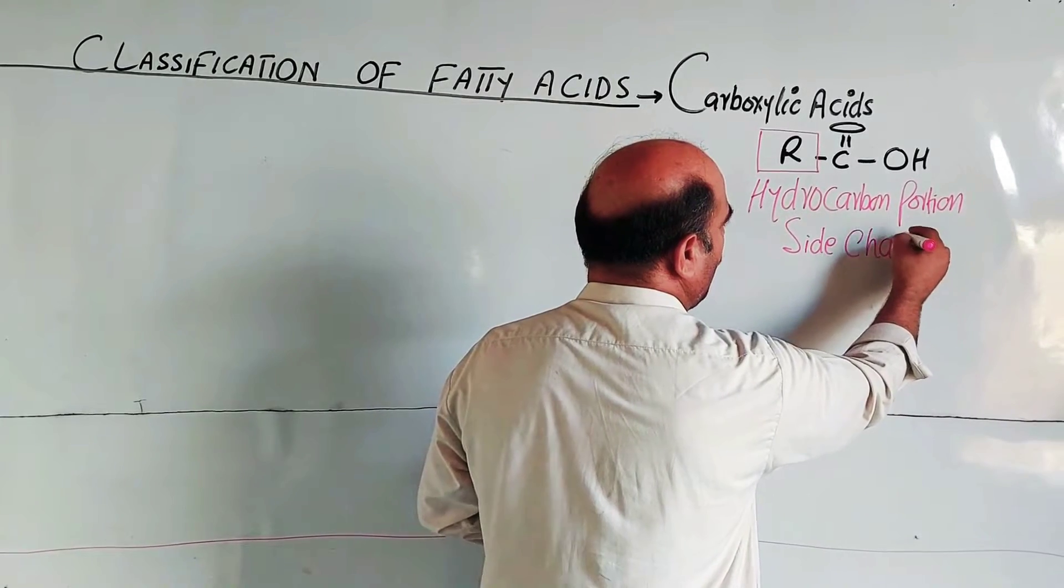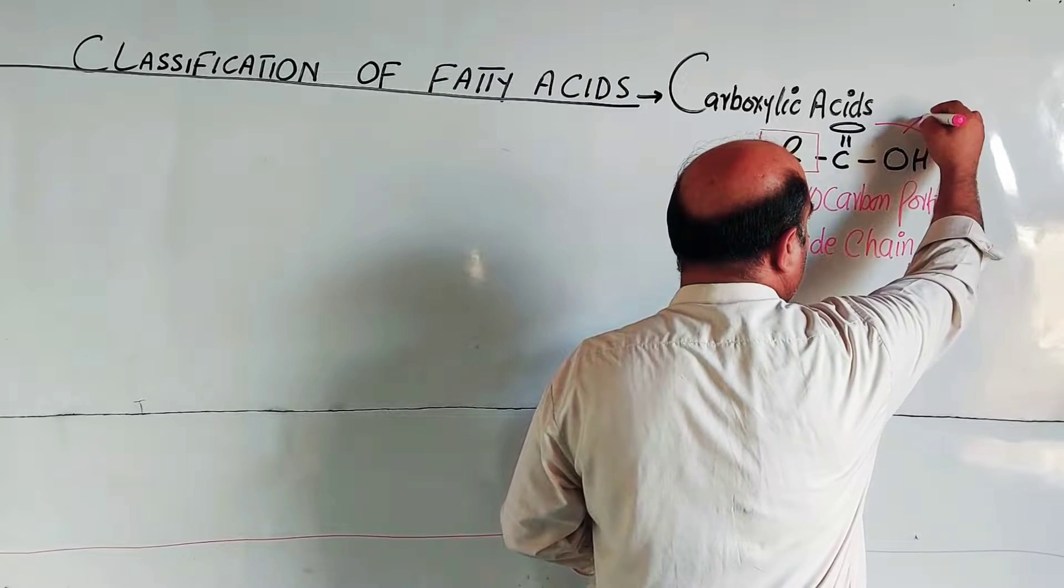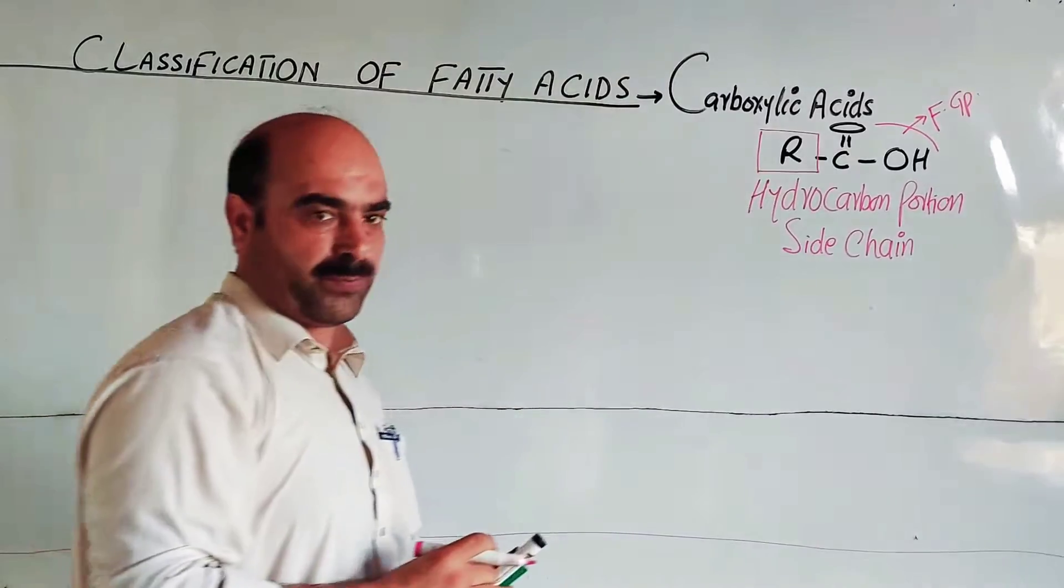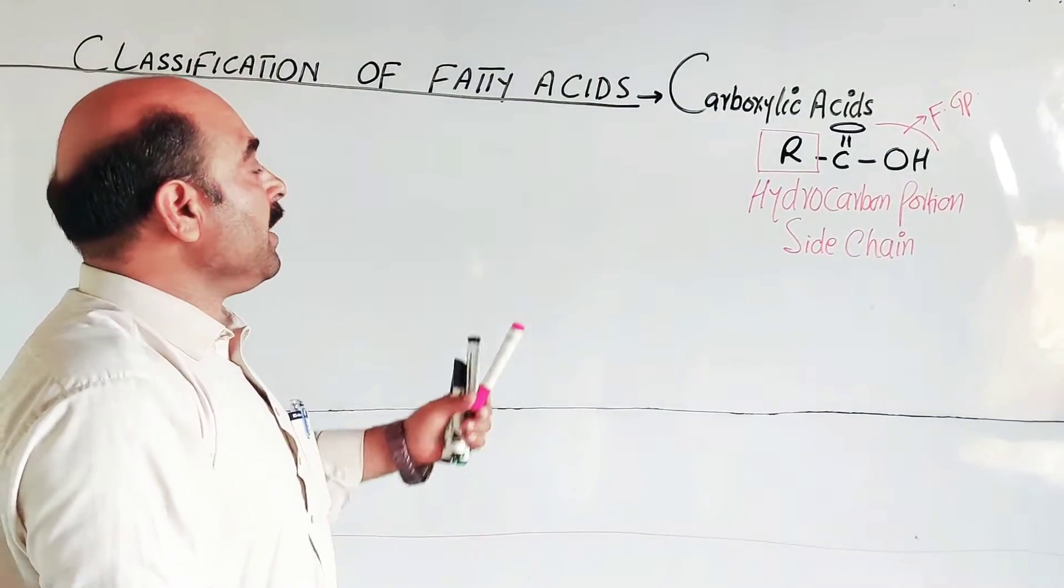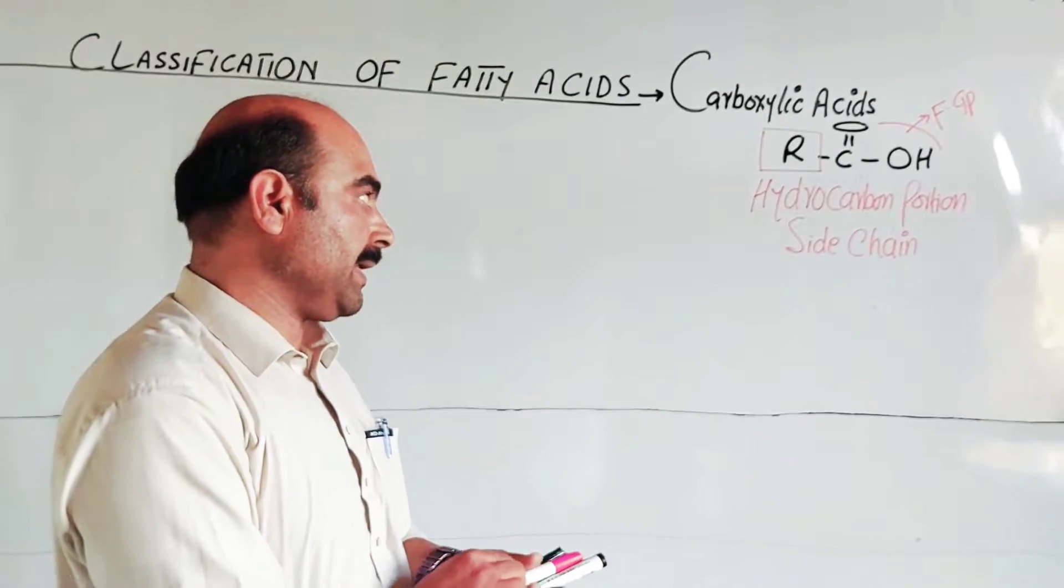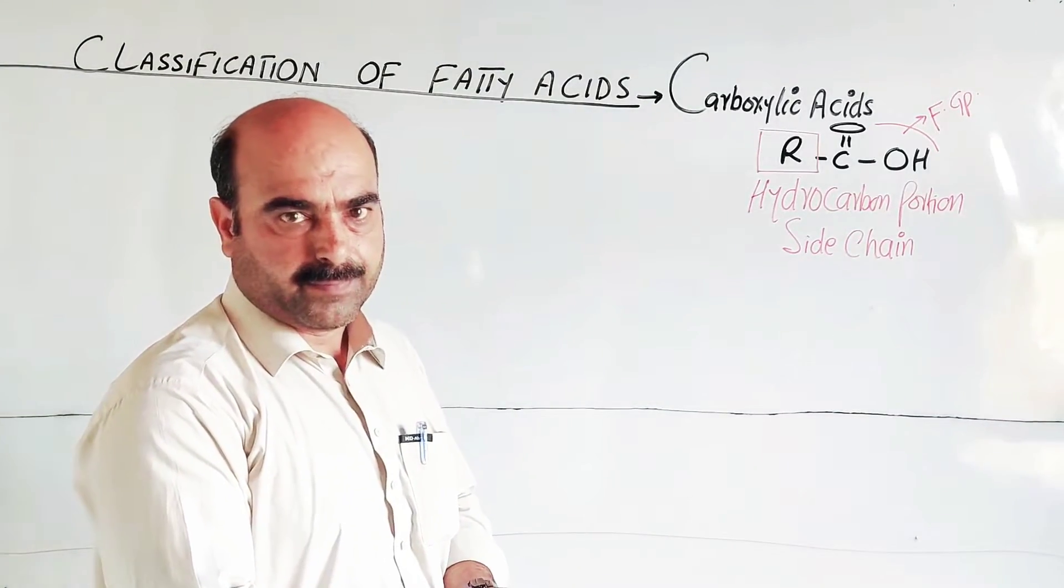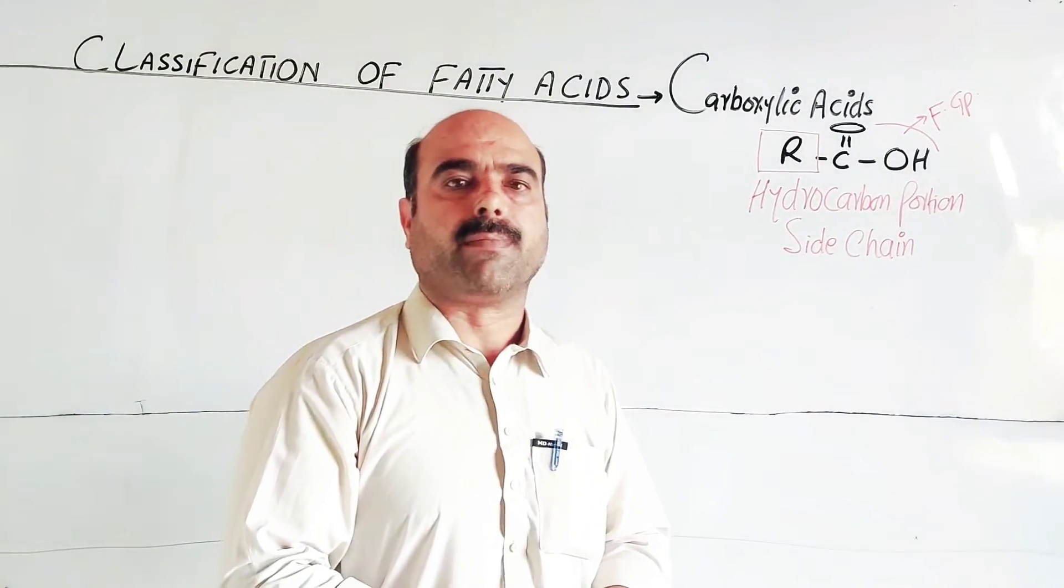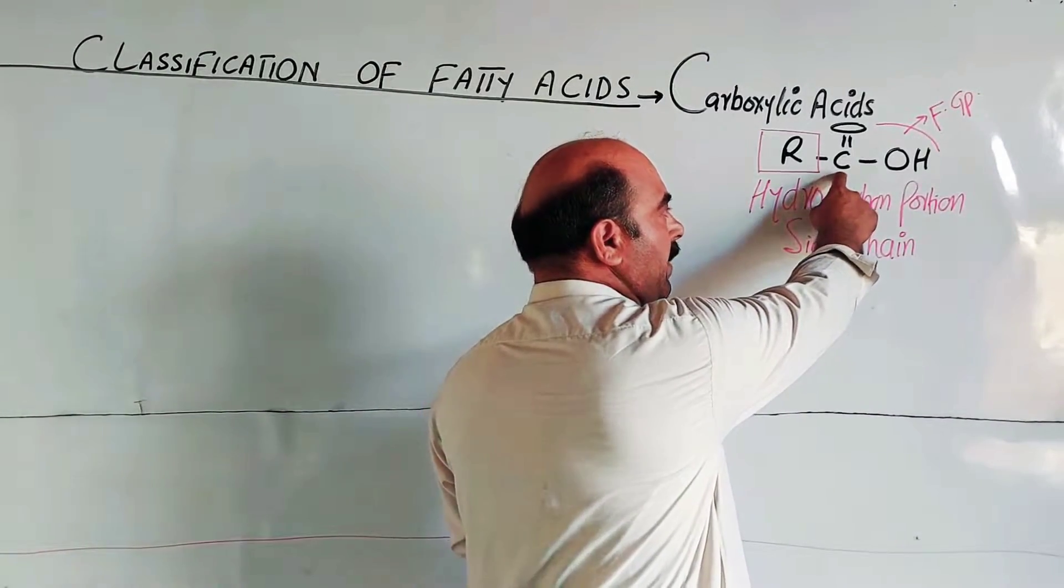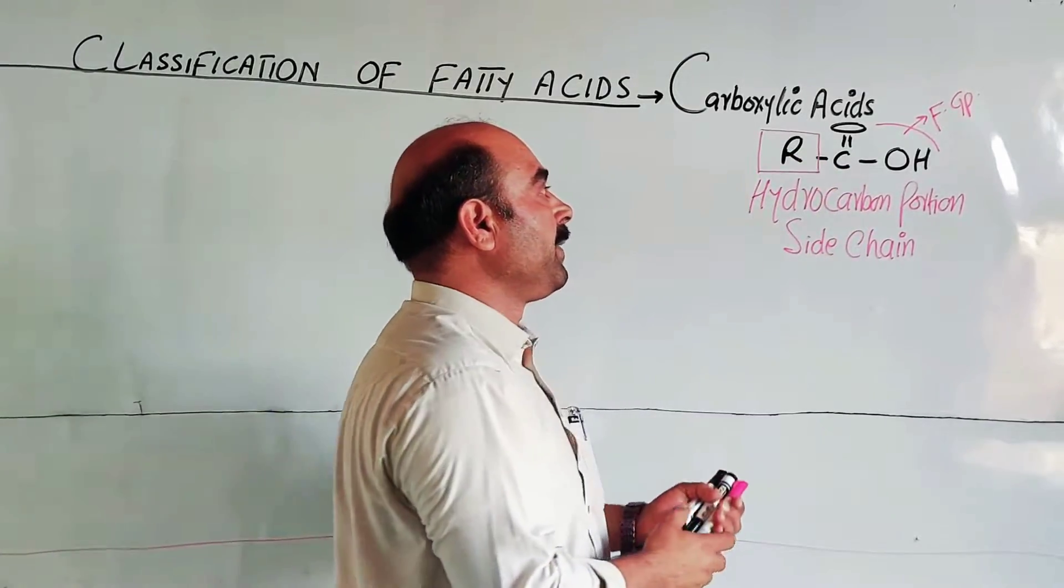The hydrocarbon portion contains carbon and hydrogen, and this is called the side chain. The hydrocarbon portion and the functional group, the carboxyl functional group. The R group can be saturated or unsaturated depending on whether the carbon-carbon bonds are single bonds or double bonds. The total number of carbons including this carboxyl group carbon is the number of carbon atoms.